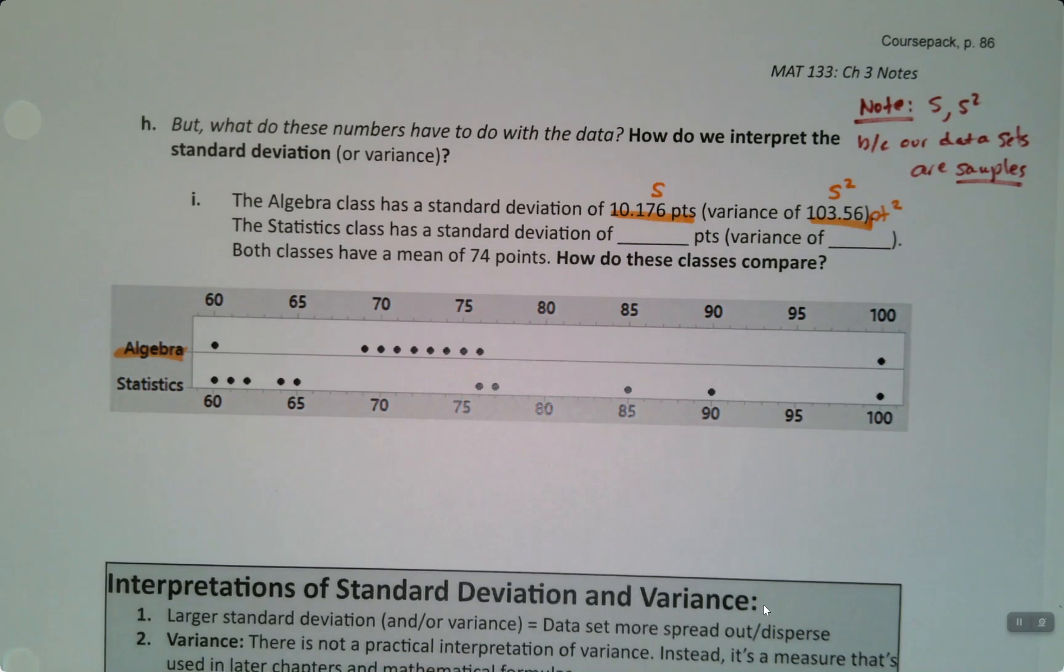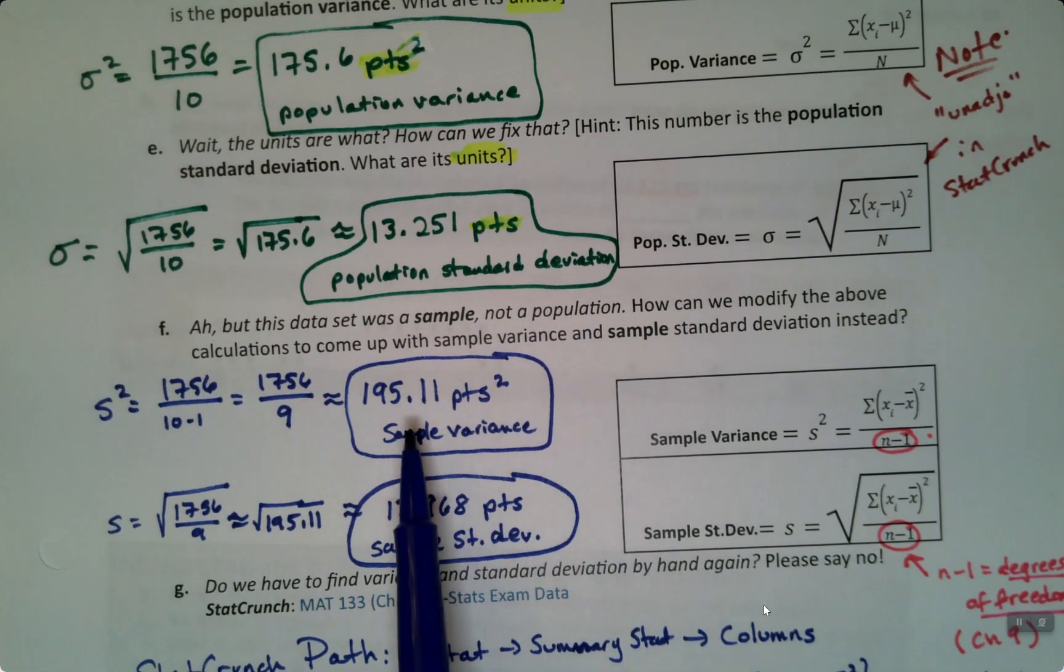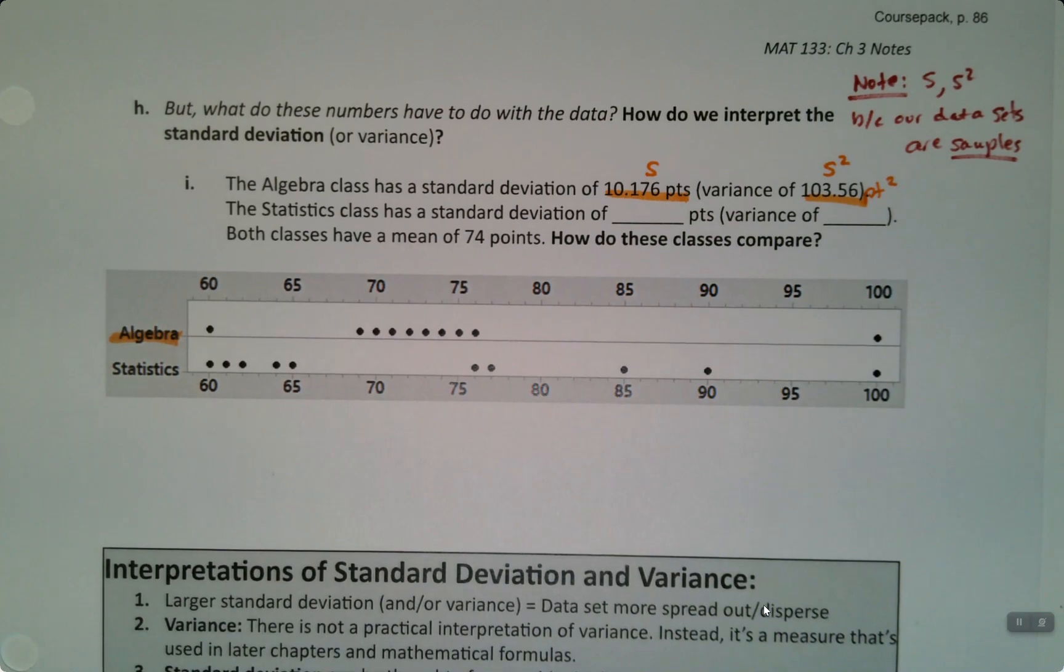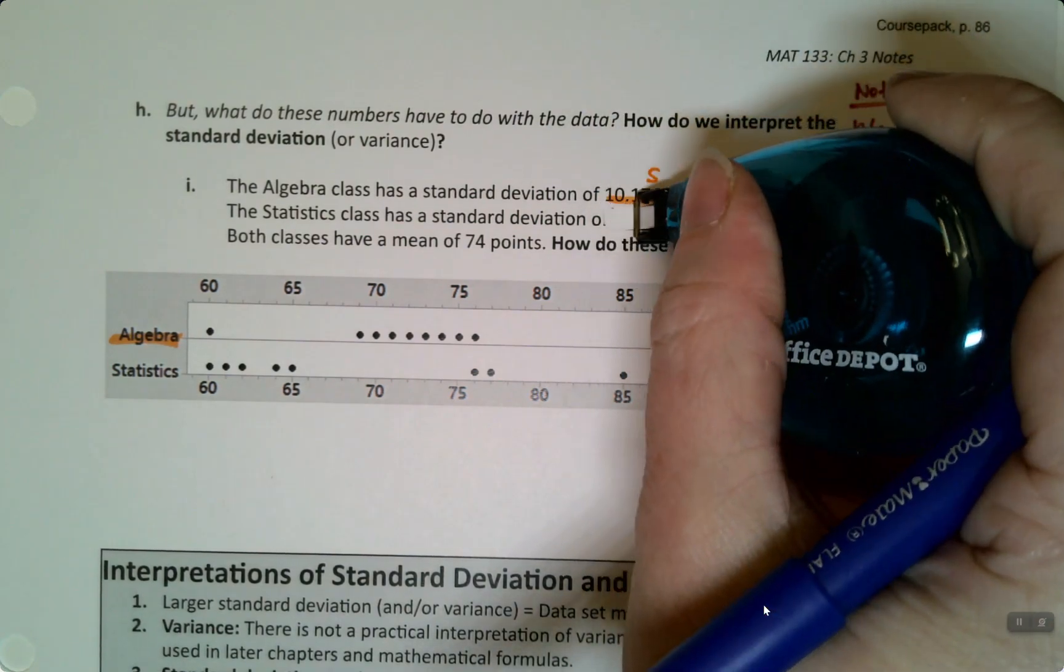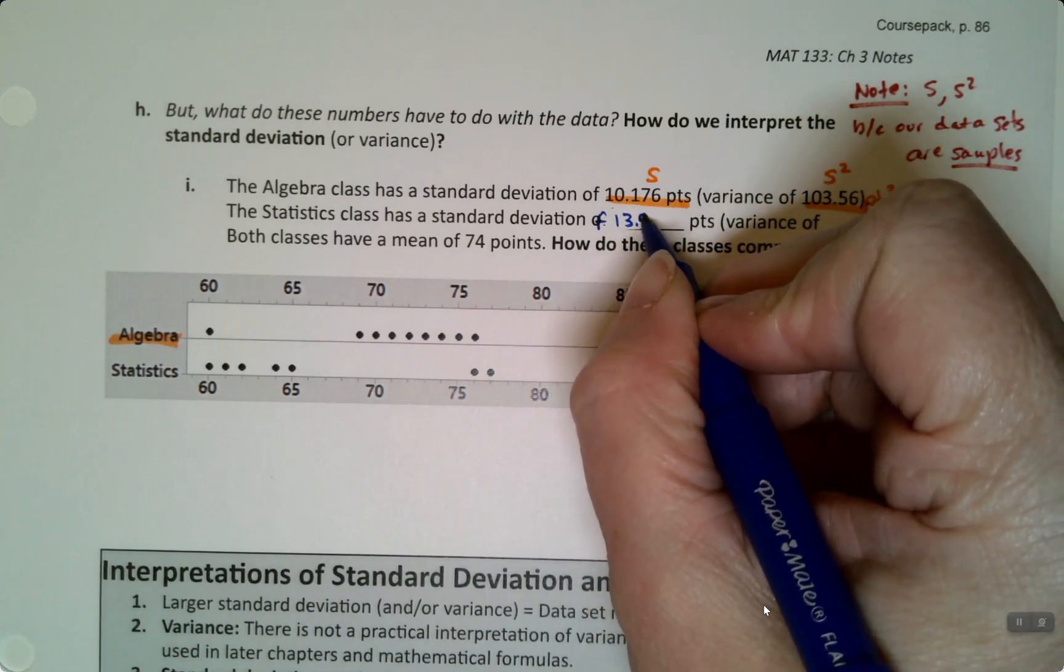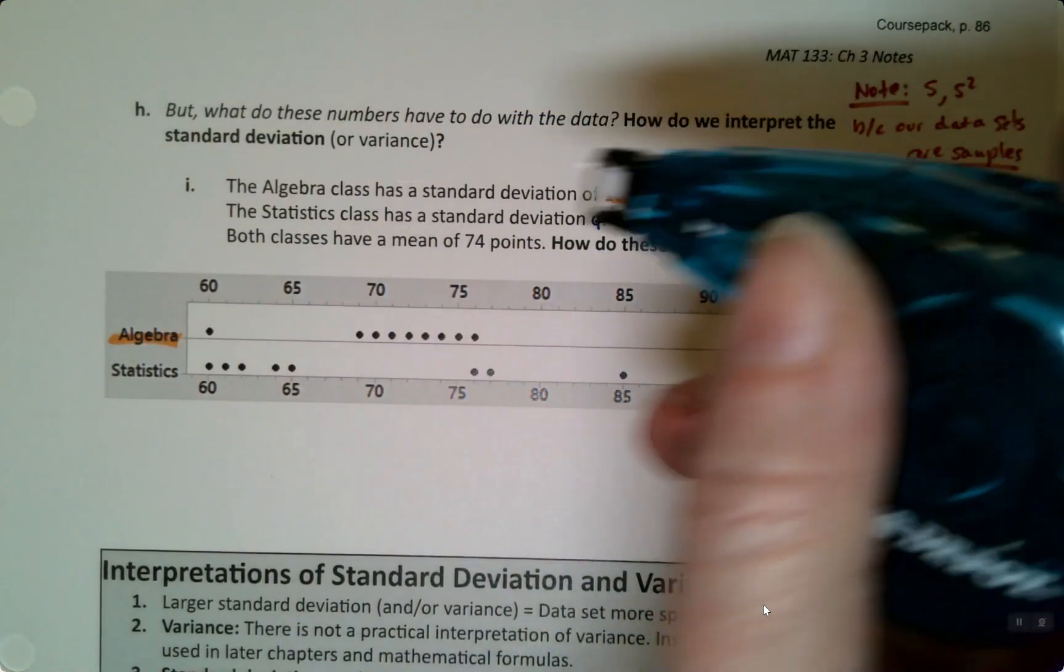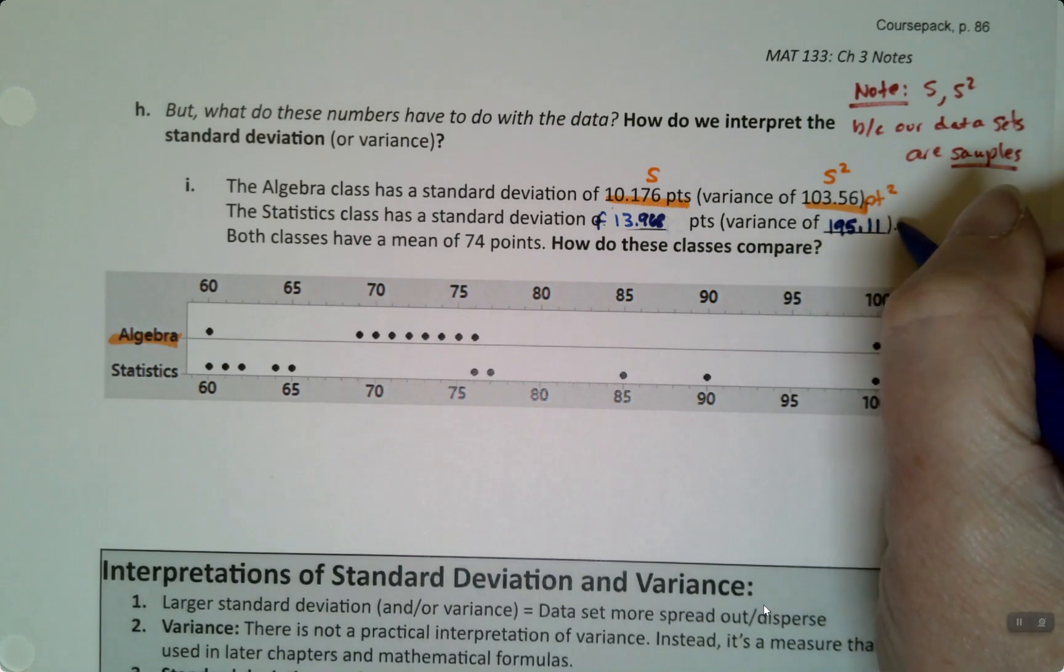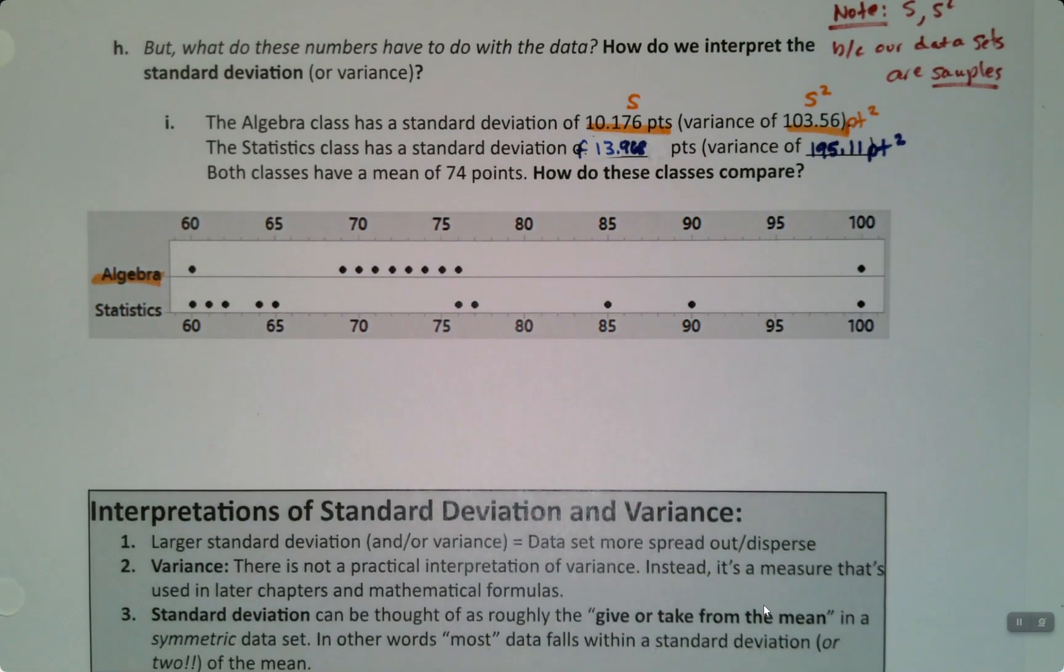Now, the statistics class, we learned the standard deviation and the variance. We found them right here. The standard deviation was 13.968 and the variance was 195.11. Okay. So let's write those in. So this was 13, I'm running out of space, so I think I'm just going to say about 14. I can say 13.968 points, oh, I already have points in there, I didn't notice that. They're typed already. Okay. And the variance was 195.11 points squared. Alright.